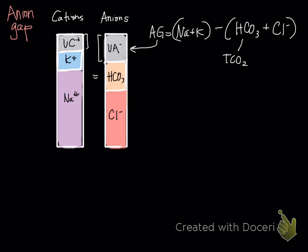So this anion gap, which is essentially this unmeasured anions, has a value normally, so you normally have some anion gap.